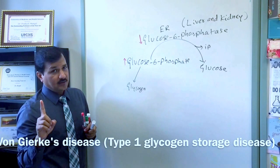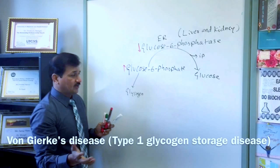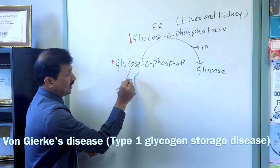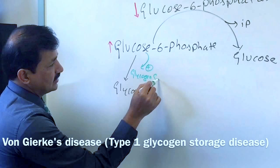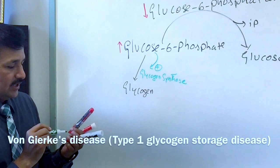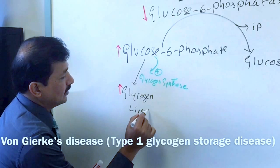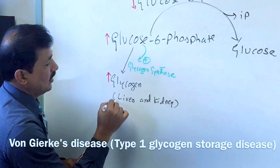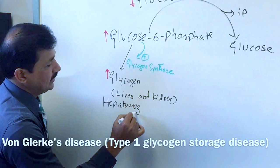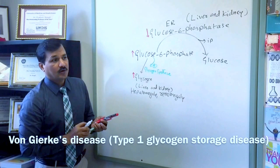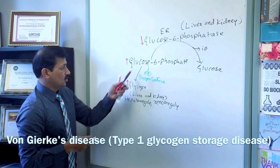Because glucose-6-phosphate accumulates, it stimulates glycogen synthase enzyme. Glucose-6-phosphate has a positive effect on glycogen synthase, leading to accumulation of glycogen in the liver and kidney. That is why you see hepatomegaly and renomegaly commonly seen in Von Gierke's disease due to the deficiency of glucose-6-phosphatase.